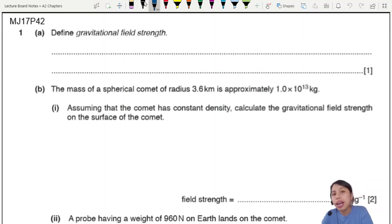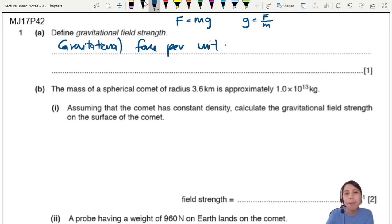MJ17 P42 Q1: define gravitational field strength. A cheating way to define this is to know the relationship between force and gravitational field strength. We know F=mg, where g is gravitational field strength - it may not be constant. It's force divided by mass, so we can say this is the gravitational force per unit mass, basically saying how strong is the field of this planet or mass.